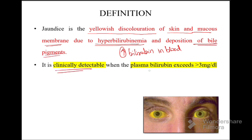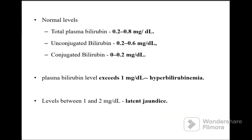Jaundice is clinically detectable when the plasma bilirubin exceeds more than 3 milligram per deciliter. Normal levels of total plasma bilirubin are 0.2 to 0.8 mg/dL. For unconjugated bilirubin it is 0.2 to 0.6 mg/dL, and for conjugated bilirubin it is 0 to 0.2 mg/dL.